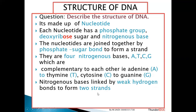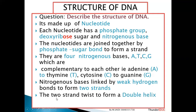The nitrogenous bases are linked together by weak hydrogen bonds to form two strands. These two strands coil or twist to form a double helix. That is basically how you are supposed to describe the structure of DNA.